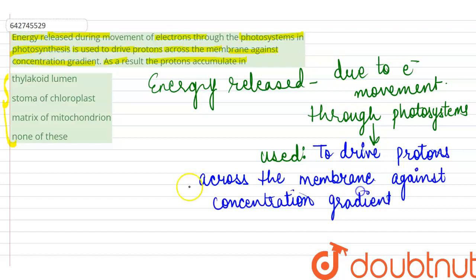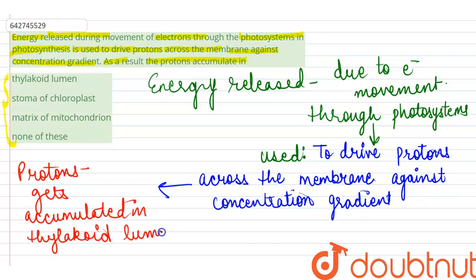So what happens as a result of this? As a result of this, the protons get accumulated in the thylakoid lumen. So in the lumen of the thylakoid, protons start getting accumulated.